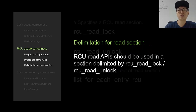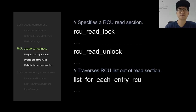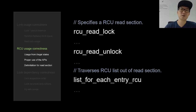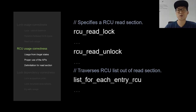RCU read APIs should be used in a section delimited by rcu_read_lock and rcu_read_unlock. list_for_each_entry_rcu is one of the RCU read APIs, so it should be used within an RCU read-side section. But this code tried to use the API outside of a read-side section, which is problematic, and LockDev would report it.